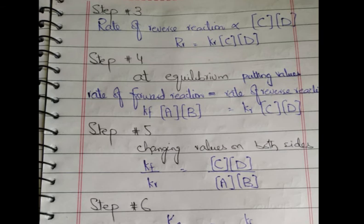In step number three, the rate of the reverse reaction is proportional to the active masses of products C and D. In the same way, removing the proportionality sign for the rate of the reverse reaction, we get kr[C][D].